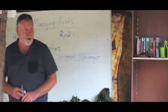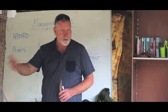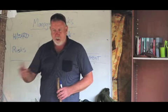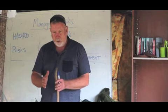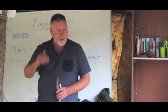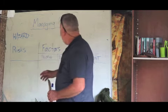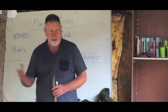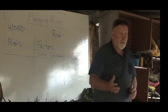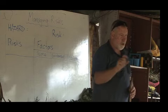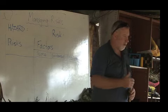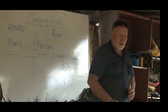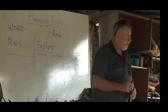So stuntmen - the reason stuntmen can do dangerous stunts and we think, oh wow, that's amazing - they've actually thought it through beforehand and looked at all the things that can go wrong. That's what we call a hazard: things that can go wrong that can harm us or cause damage. They've looked at all that and found ways to reduce the chance of that happening. So even though what they're doing looks dangerous, they've actually managed a lot of risks and reduced the chance of something bad happening.